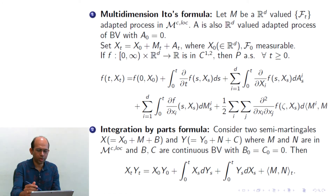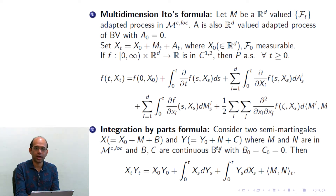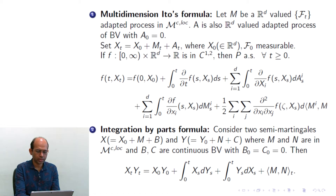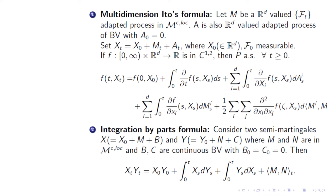There is another important result: the integration by parts formula. Consider two semimartingales X and Y, where X has decomposition X₀ + M + B, and Y has decomposition Y₀ + N + C, where M and N are continuous local martingales and B and C are adapted bounded variation processes with B₀ = C₀ = 0. Then X_t Y_t = X₀Y₀ + ∫₀ᵗ X_s dY_s + ∫₀ᵗ Y_s dX_s + ⟨M, N⟩_t.